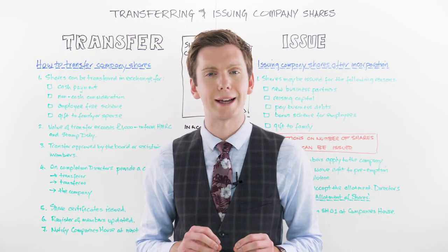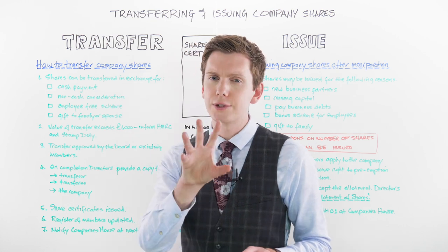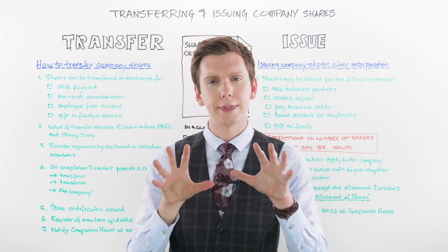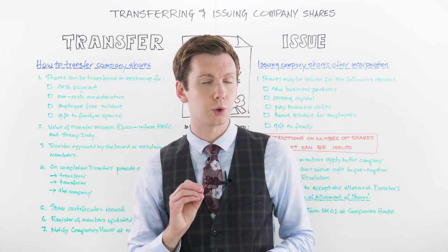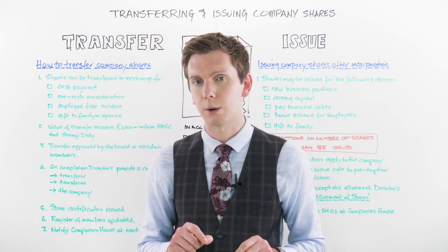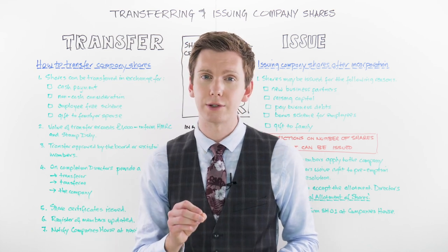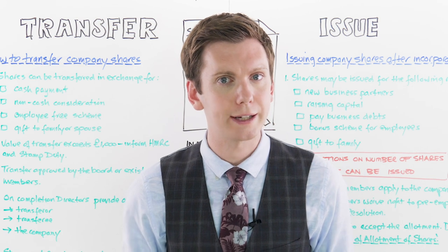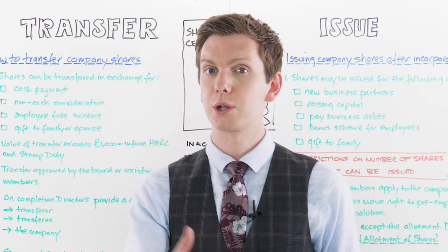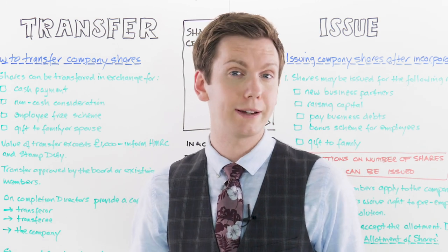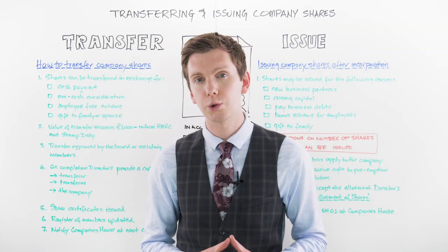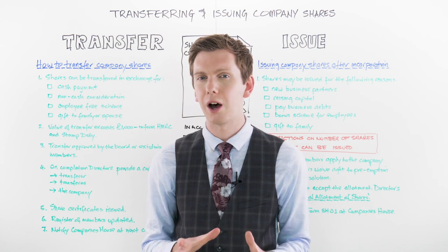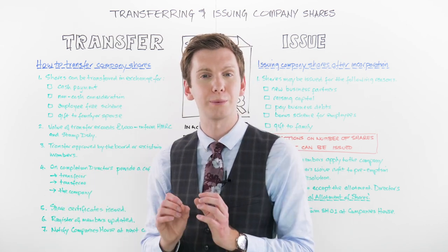For example, say you have a company and you own 25% of the issued shares. If the company seeks to issue more shares in the future, you must be given the option to purchase 25% of the shares that become available. You can of course decline, at which point they'll be offered to outside prospective members. Preemption rights can also help prevent non-members from joining a company and potentially harming the status quo or overall mission of the business.